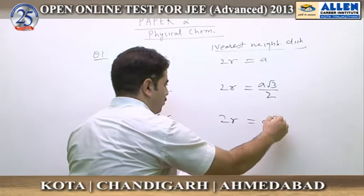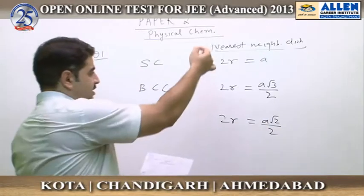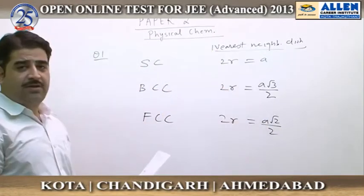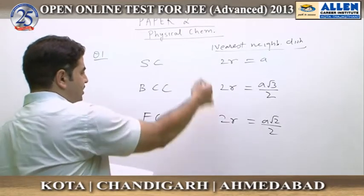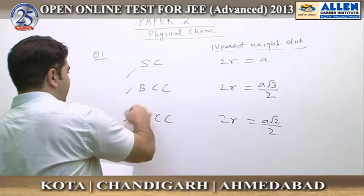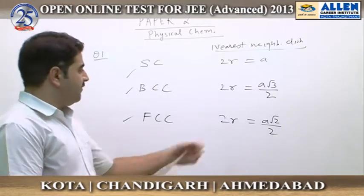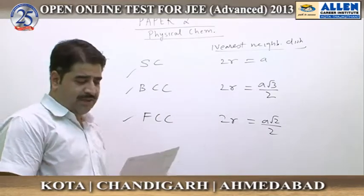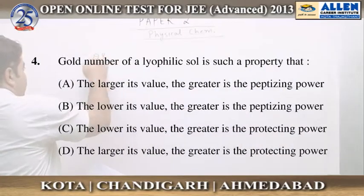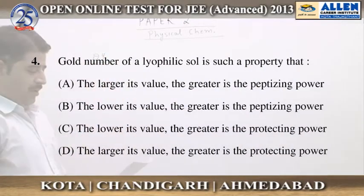Since the radius r is given the same for all three crystals, the nearest neighbor distance is going to be equal in all three crystals, because a is going to be different and r is the same.